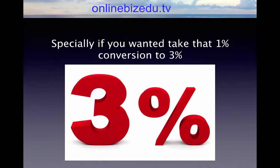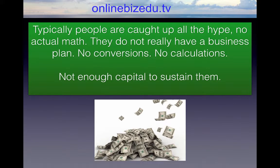When you try to get someone to buy a $20,000 package, you need to be good at some of those things — especially if you want to take that 1% conversion to 3%. Typically, people are caught up in all the hype, with no actual math. They don't really have a business plan, no conversions, no calculations, and not enough capital to sustain them.